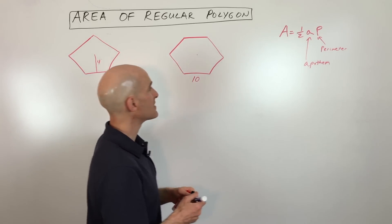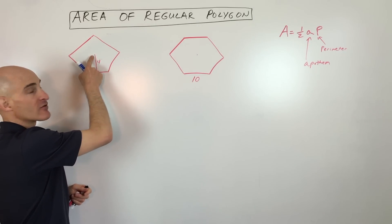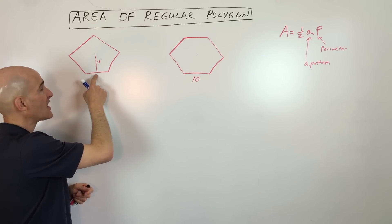Well, apothem, what that is, is it's the perpendicular distance from the center of the polygon to one of the sides.